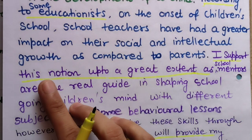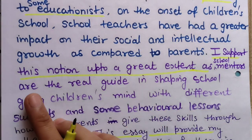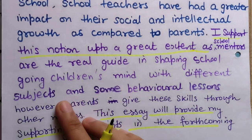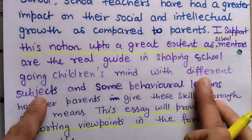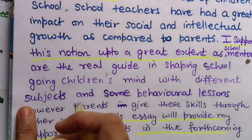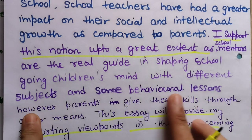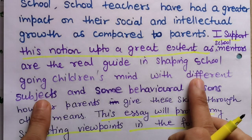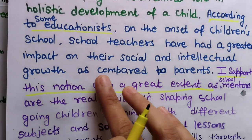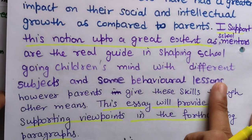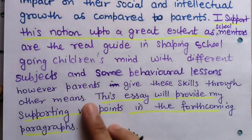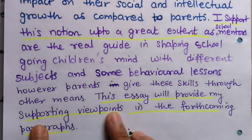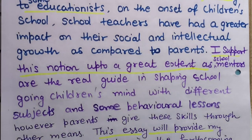My opinion sentence: 'I support this notion up to a great extent as school mentors are the real guide in shaping school-going children's minds with different academic subjects and some behavioral lessons.' Instead of 'intellectual' I used 'academic subjects,' and instead of 'social development' I used 'behavioral lessons.' I then add: 'However, parents also give these skills through other means.' The final line: 'This essay will provide my supporting viewpoints in the forthcoming paragraphs.'